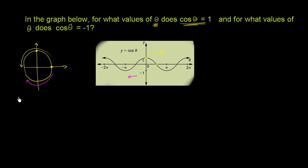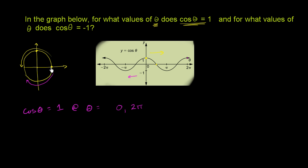So let's answer the question: for what values of theta does cosine of theta equal 1? We can just read the graph right over here. Cosine of theta equals 1 at theta equal to 0. Then we have to go all the way again to 2 pi. But then it just keeps going on and on. Cosine of theta — the x-coordinate on the unit circle — equaled 1 right when we were at angle 0, and we had to go all the way around the circle, 2 pi radians, to get back to that point.